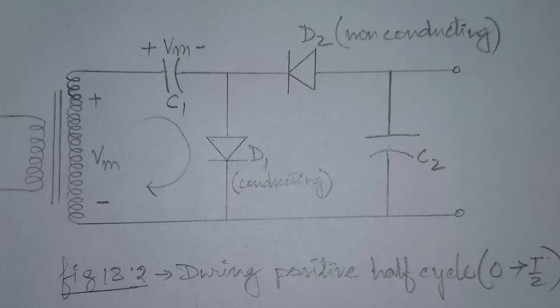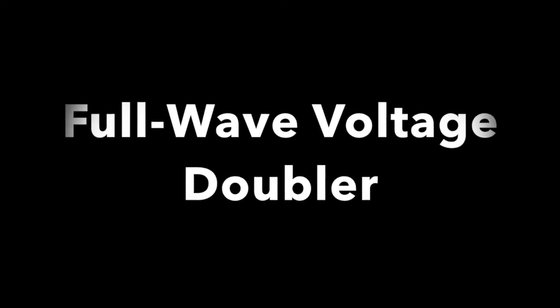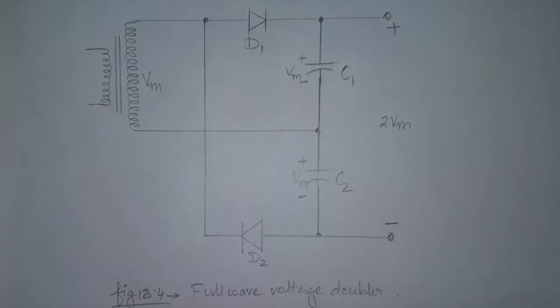The peak inverse voltage across each diode is twice Vm. Now, let us discuss the working of a full wave voltage doubler circuit.